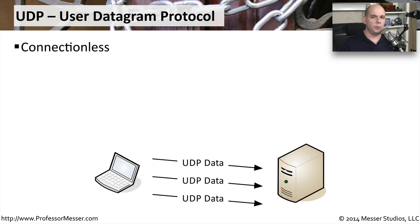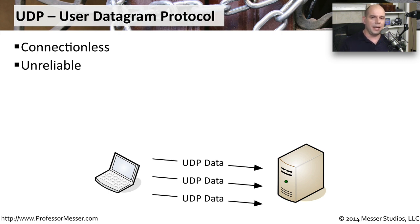The other common transport protocol on our networks is UDP, which stands for User Datagram Protocol. UDP is connectionless — there's no formal handshake process, no numbering of traffic as it goes across the network, and no acknowledgments. When you send UDP data, you have no idea whether that traffic made it to the other side. We call this an unreliable protocol because of that.